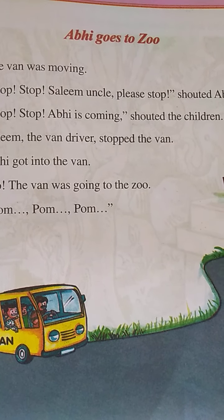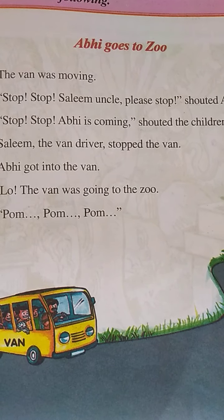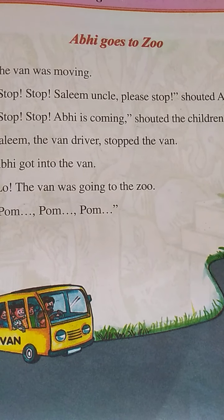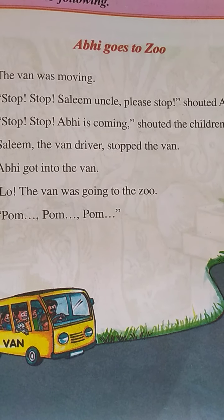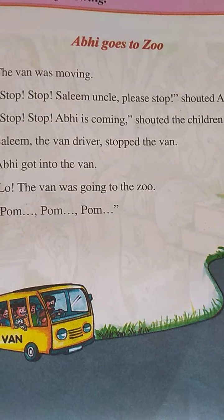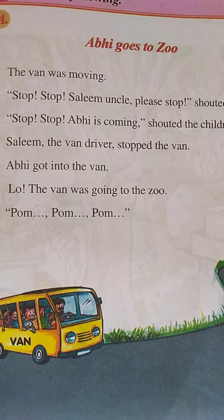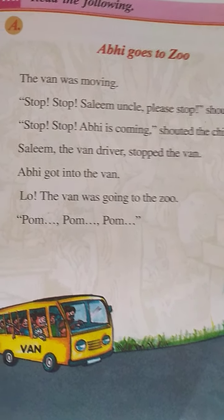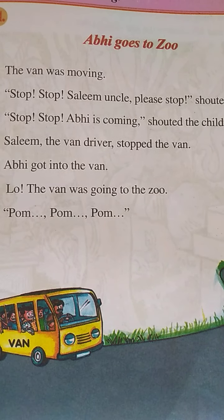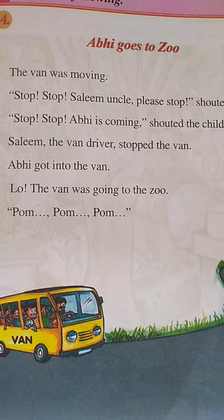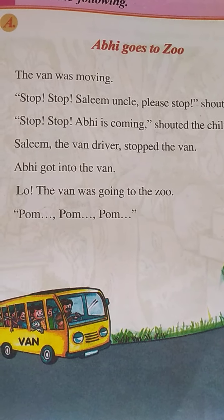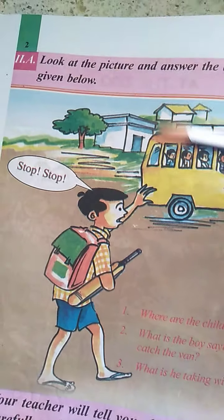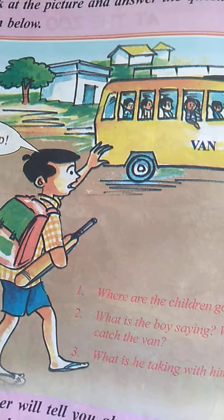We answered the questions: why did Abhi get up in the morning, who is Sweetie, and why did Abhi not take Sweetie with him. Abhi got up early in the morning to go to the picnic. Sweetie is Abhi's kitten. Abhi did not take Sweetie with him because he is going to see all the animals in the zoo. The children are going to the picnic.